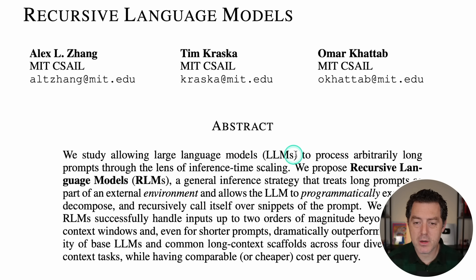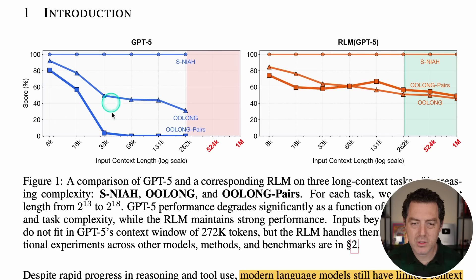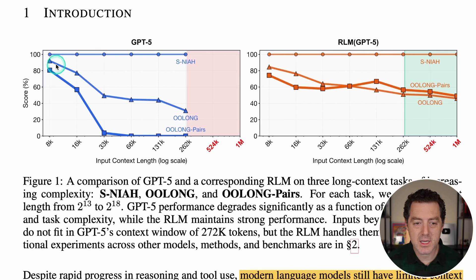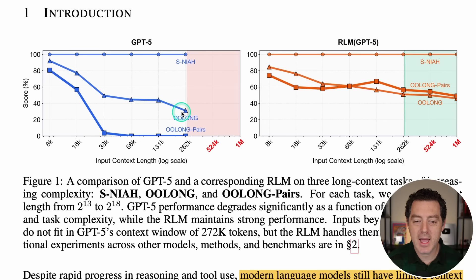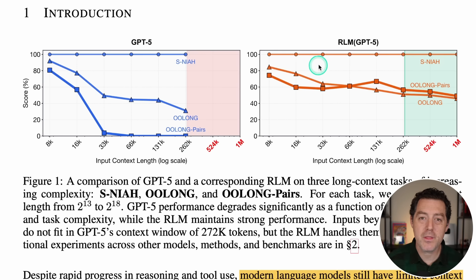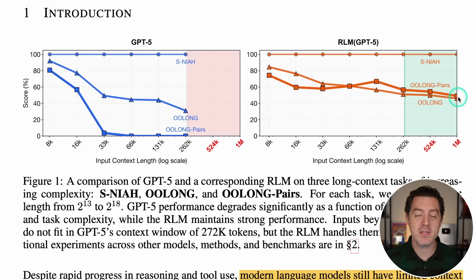The paper studies allowing large language models to process arbitrarily long prompts through the lens of inference time scaling. Looking at the high-level results: GPT-5 without the technique works well on needle-in-the-haystack, but for Oolong and Oolong pairs, it rapidly declines in quality as context length increases and basically goes to zero right around 262k tokens. However, with the new recursive language model strategy, quality stays pretty consistent even up to 1 million tokens.